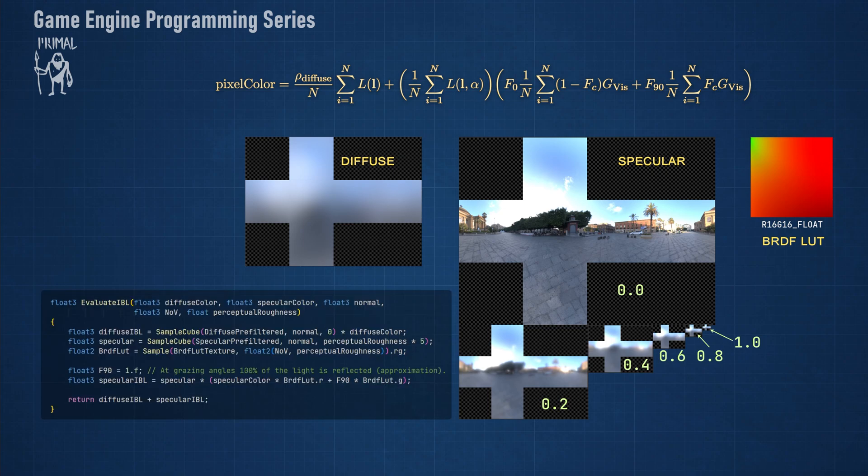Like I said, we sample from the diffuse cube map using the normal vector at the current pixel and multiply the sampled value by the diffuse color of the material.